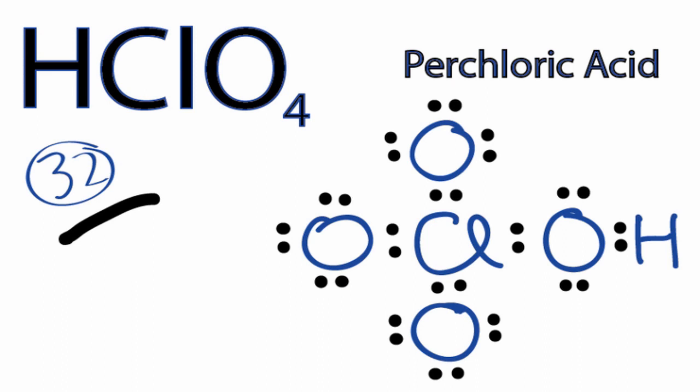So it looks like this is a pretty good Lewis structure for HClO4. However, chlorine is below period 2 on the periodic table. That means it can have an expanded octet. It can hold more than 8 valence electrons. So we need to look at the formal charges to make sure that this is the best Lewis structure for HClO4.